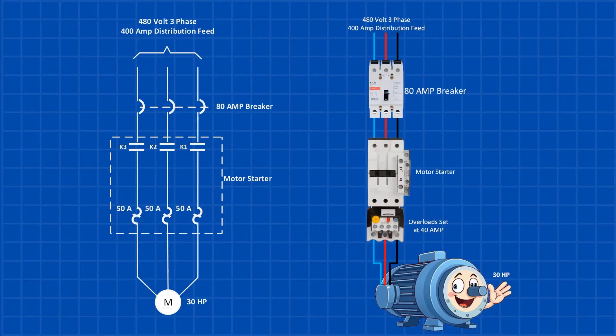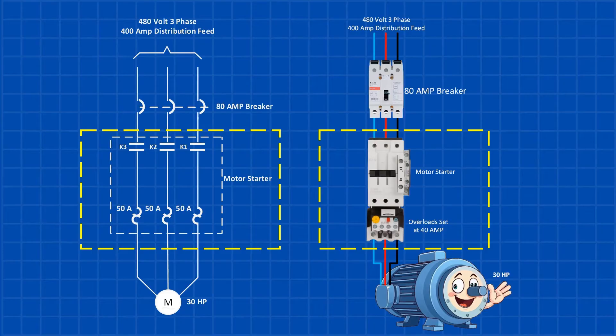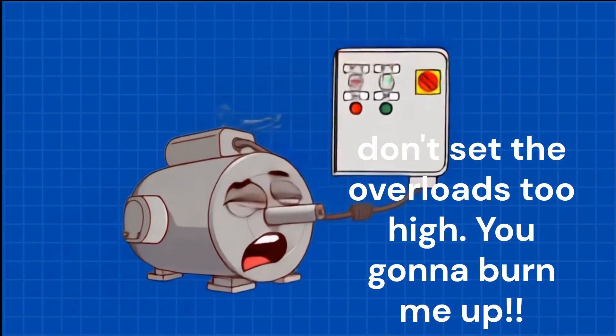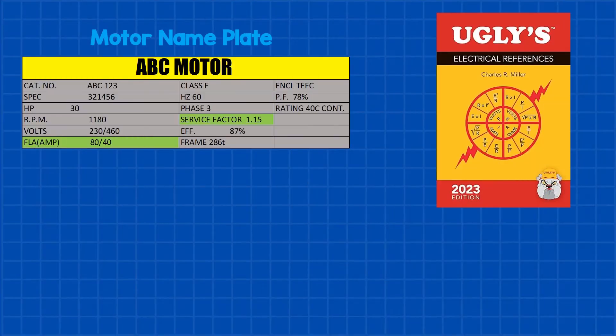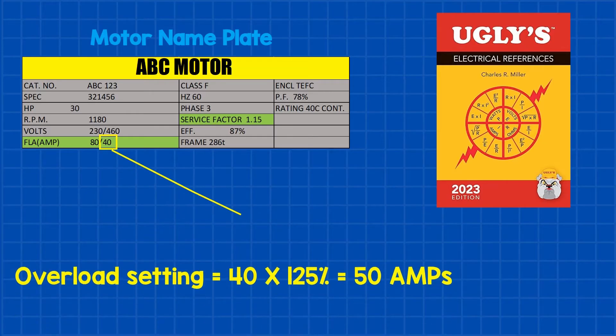To start a three-phase motor, all three phases need to be powered simultaneously, and that's where a motor starter comes into play. It has three contacts that close at the same time to send power to the motor. The motor starter also includes overload protection. If the motor draws too much current beyond the set limit, the overload protection trips, cutting off power to prevent motor damage. The overload setting should never exceed 125% of the motor's full-load current. For a 40-horsepower motor, this means the setting should be no higher than 50 amps.